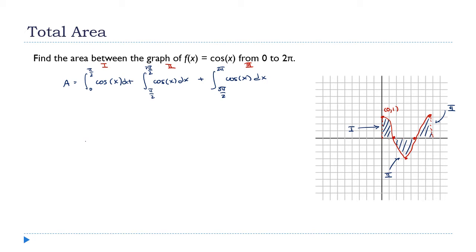From the graph I already know it's the middle section that will be negative, so that's the one needing an absolute value. But sometimes you won't know in advance — you could test a point on the interval, but I usually don't bother. I just split it up, compute the antiderivatives using the fundamental theorem, and at the end I can see which numbers are negative and go back and apply the absolute value.